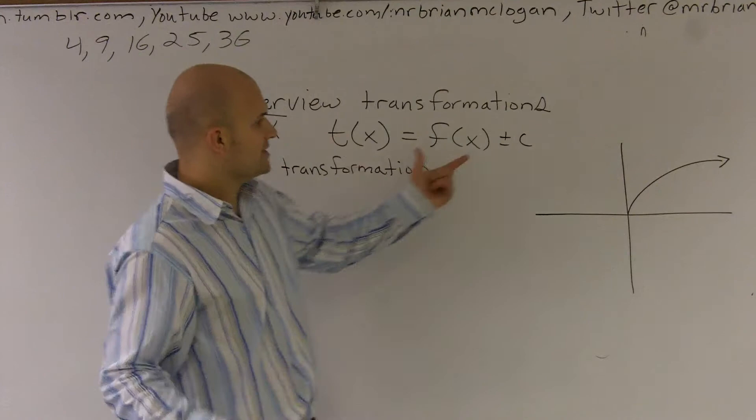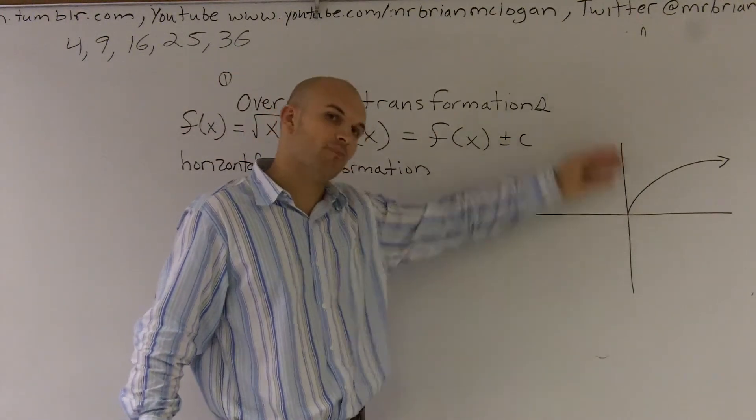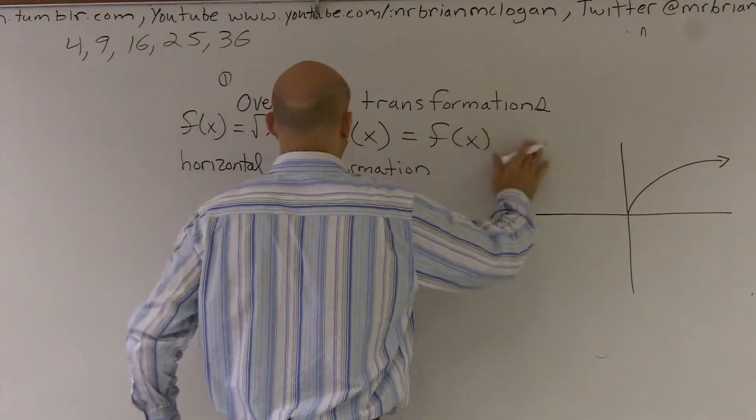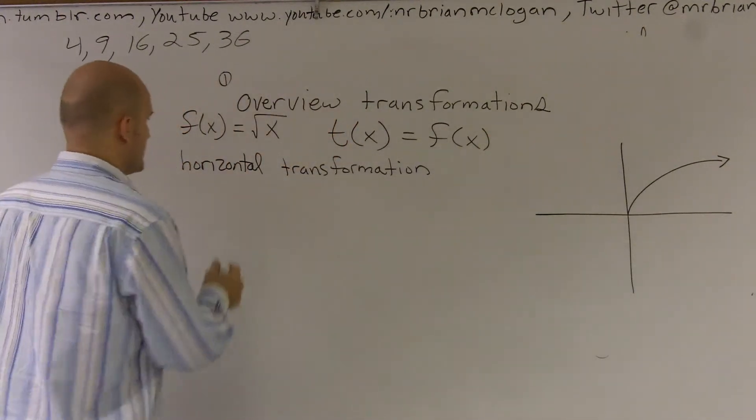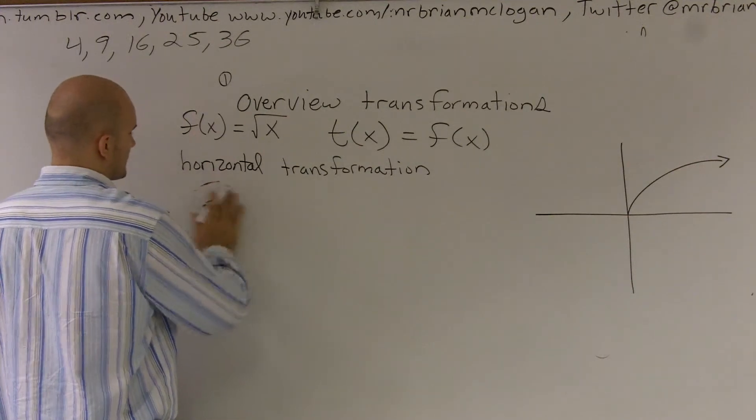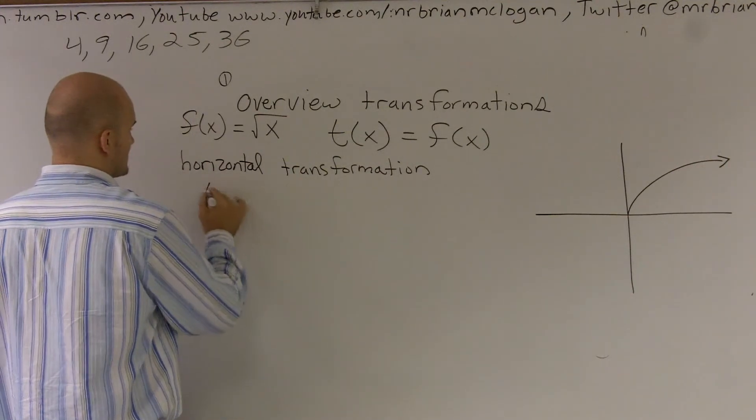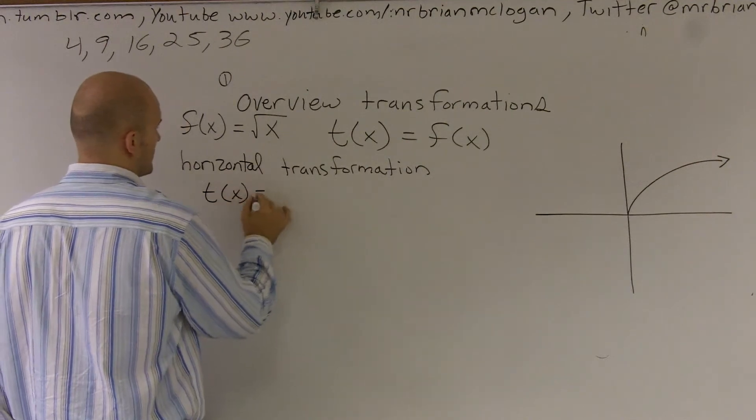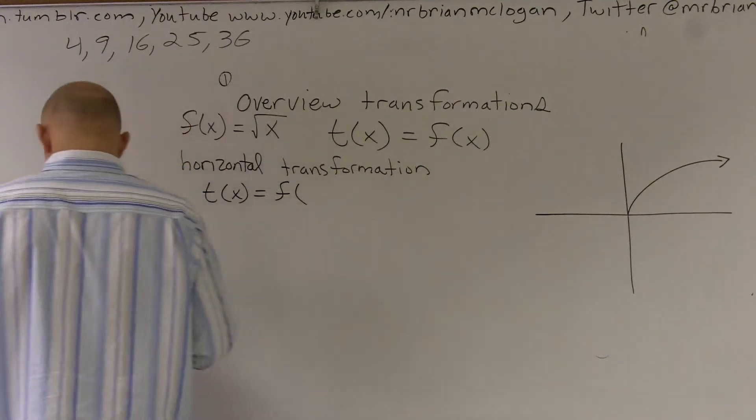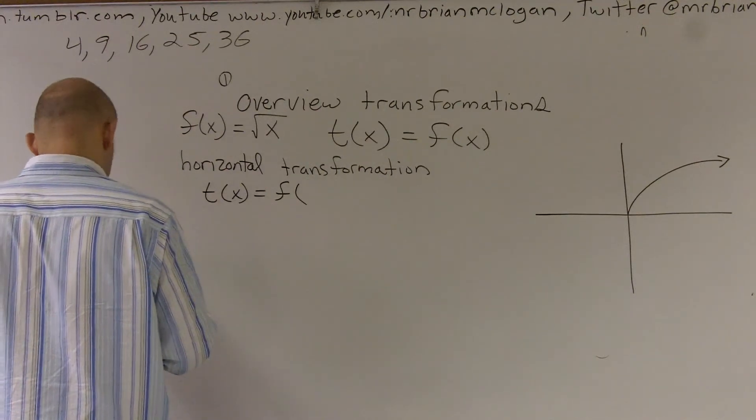What happened was that shifted it up or down or changed the y-coordinates. Now when we're dealing with horizontal transformations, we're going to have a horizontal transformation is now when we do t(x) equals f, and I want to write this.